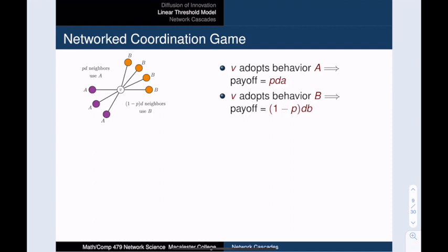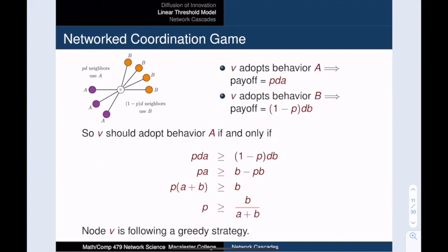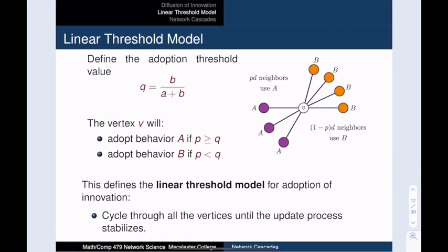So which behavior is better for vertex V? If V adopts behavior A, then its payoff is P times D times A. And if V adopts behavior B, then its payoff is 1 minus P times D times B. Now vertex V is motivated to pick the behavior that gives the highest payoff. In other words, V should adopt behavior A if and only if P times D times A is bigger than 1 minus P times D times B. And a little algebra gives an equation for P in terms of A and B. We find that vertex V should choose behavior A only when P is greater than or equal to B divided by A plus B. It is worth noting that V is being selfish and following a greedy strategy. V's only concern is to maximize its own payoff.